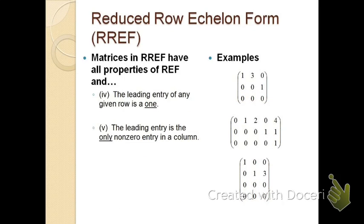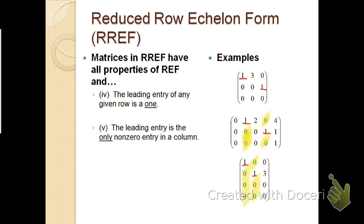When looking at reduced row echelon form, RREF, it has all the properties of REF, but additionally, each leading entry must be a one — called a leading one. Also, each leading one must be the only non-zero entry in its column, meaning there are zeros both above and below each leading one.